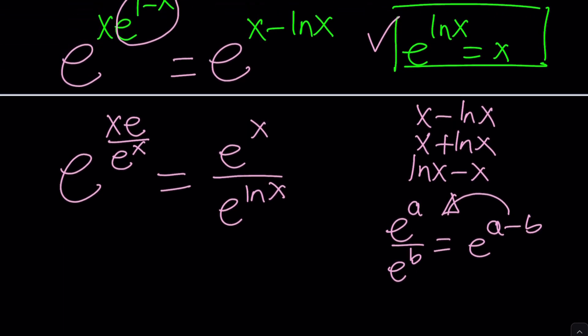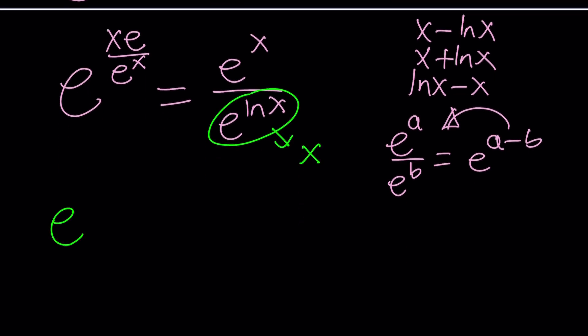This looks complicated doesn't it? And there was an easy way to do it but I forgot. Sorry about that. If you can come up with it let us know in the comment section. So here's my next thing in a more complicated manner. First of all I'm going to replace this with x which is nice. So we get e to the power x e divided by e to the x equals e to the x divided by x.